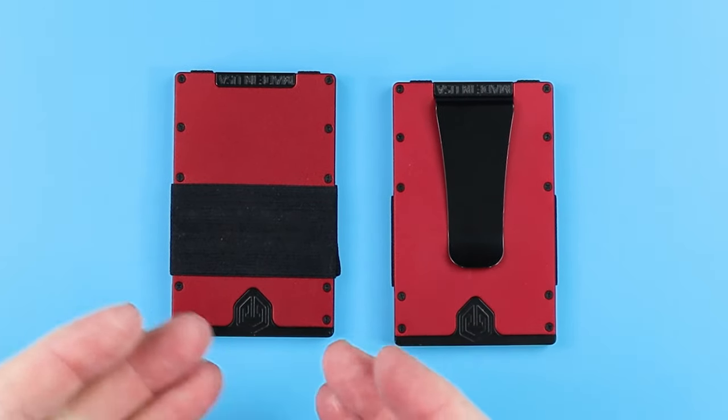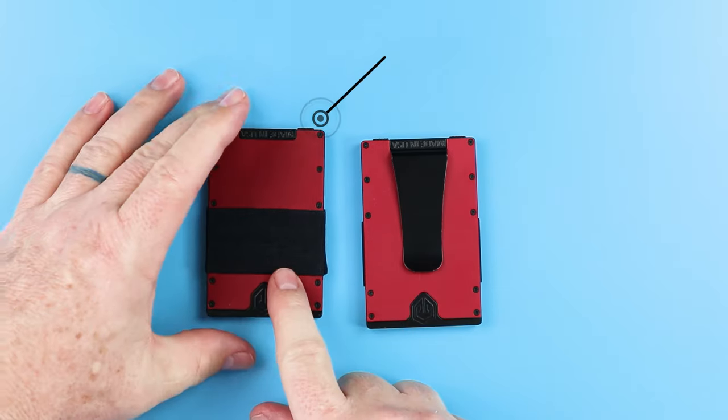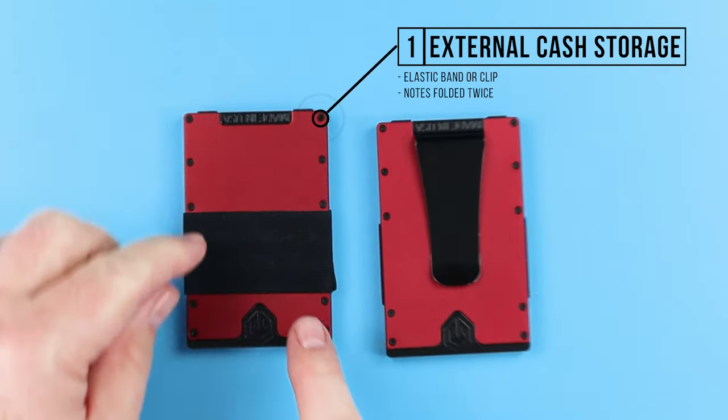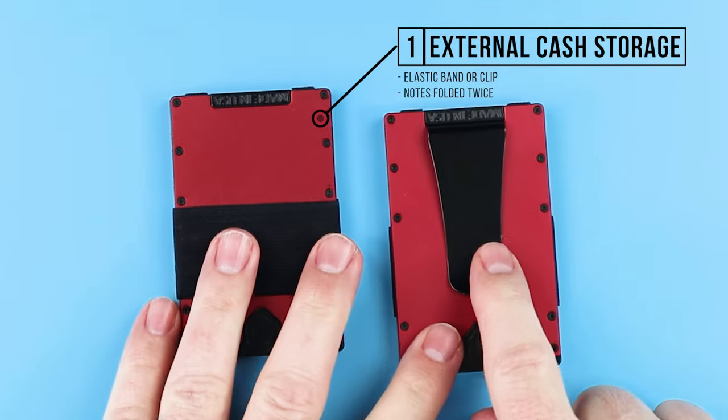And I like this red color, but it also comes in five other colors, plus carbon fiber. Now you can see with both of these that they come with an external cash storage. This is an elastic band and we actually have a clip.